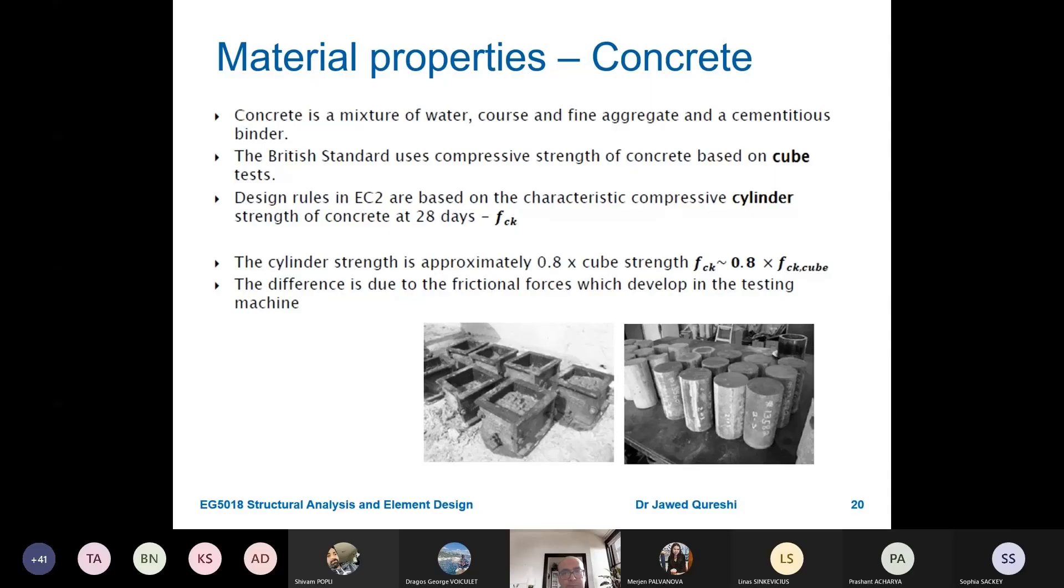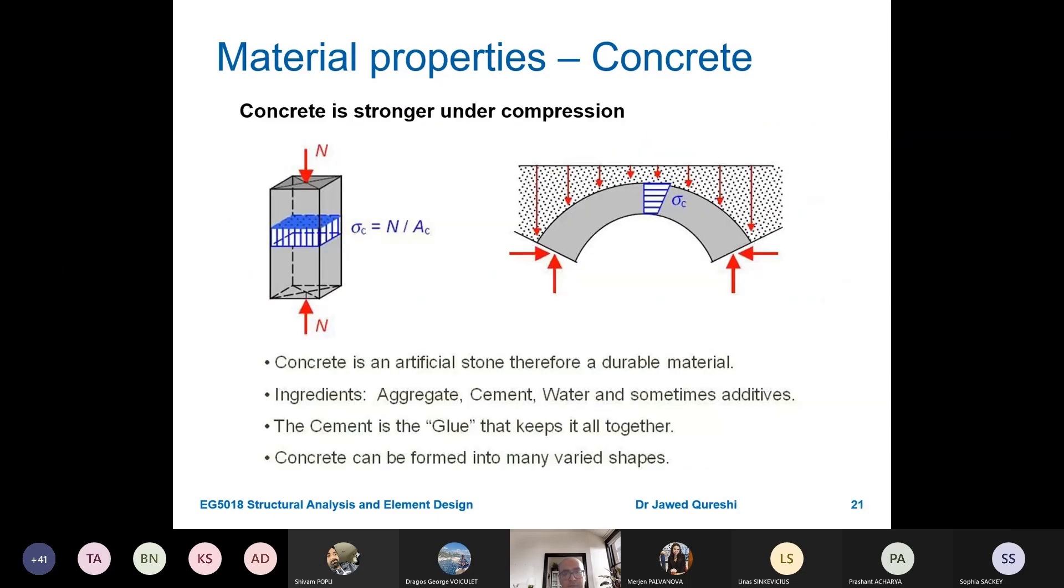The properties of concrete. Now British standards use cube tests, in Euro Code we have cylinder test. We have to work out this fck after 28 days. The cylinder strength is approximately 0.8 times the cube strength. Concrete is strong under compression, it's an artificial stone that is durable with aggregate and cement.